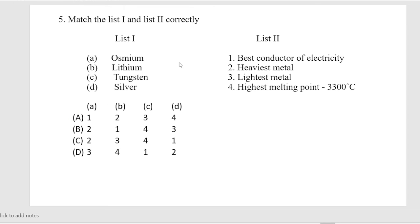Next question, match the following. Osmium is the heaviest metal. Lithium is the lightest metal. Tungsten has high melting point of 3300, used in tungsten bulbs. Silver is the best conductor of electricity. Answer is 2, 3, 4, 1, which is C, the right answer.